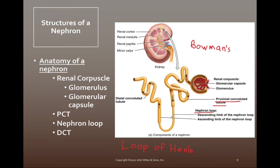The loop of Henle has a descending limb, which is generally thinner, and then a hairpin turn that ascends — the ascending limb tends to be thicker than the descending limb. The ascending limb takes substances up into the distal convoluted tubule, or DCT, at the terminating end of the nephron. Each part of the nephron is important for reabsorbing and secreting certain substances into its lumen. The nephron eventually dumps into the collecting ducts, which pass through the renal medulla, become papillary ducts, and dump urine through the renal papillae into the minor calyx.